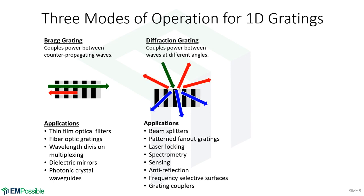Diffraction gratings are great for beam splitters. There are pattern fan-out gratings — those are the things you can screw on the end of a laser pointer and make snowflakes and snowmen. We can make spectrally selective mirrors because it acts somewhat like a mirror in that it reflects light, but the angle of this reflected light is wavelength sensitive.